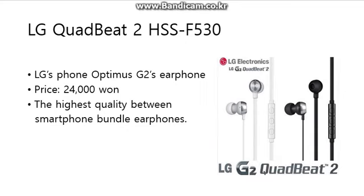The last headphone is a cheap and common one: the LG Quadbeat 2 HSS F530. This is the basic earphone bundled with the LG Optimus G2 cell phone, costing only 24,000 won — and you may find it even cheaper online. Many people ignore it because it is a bundled earphone, but the Quadbeat 2 actually has the highest quality among other smartphone bundled earphones. It makes comparatively clean sound and has less distortion. I think this earphone has the highest cost-effectiveness in its price category.